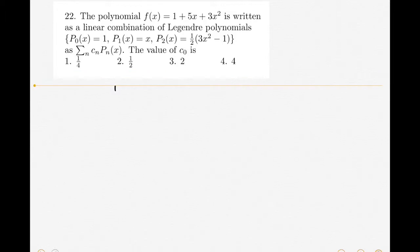First, f(x) is given - let's write f(x). f(x) is 1 + 5x + 3x². So we have to express this as a sum cₙPₙ(x), but the Pₙ(x) are all given - P₀, P₁, and P₂.